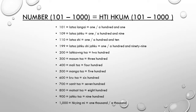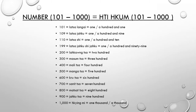Let's count more from number 101 up to 1,000. 101 is Lasa Langay. 109 is Lasa Jiku. 110 is Lasa Shi. 199 is Lasa Jiku Si Jiku. 200 is Lekon Sa, 300 is Masum Sa, 400 is Meli Sa, 500 is Menga Sa, 600 is Kru Sa, 700 is Senit Sa, 800 is Masat Sa, 900 is Jiku Sa. 1,000 is Kingme.